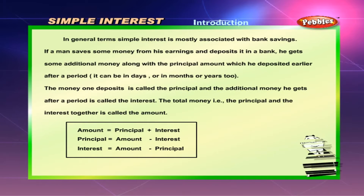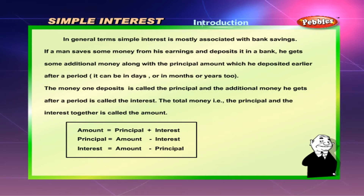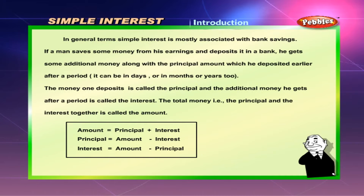Simple interest introduction: in general terms, simple interest is mostly associated with bank savings. If a man saves some money from his earnings and deposits it in a bank, he gets some additional money along with the principal amount which he deposited earlier after a period — it can be in days, months, or years. The money one deposits is called the principal, and the additional money he gets after a period is called the interest.